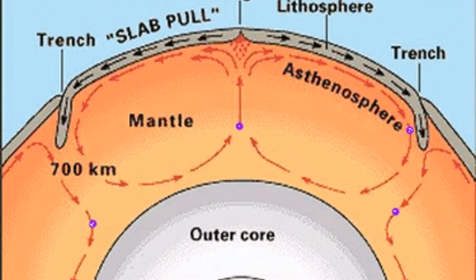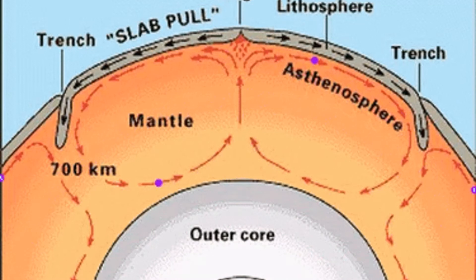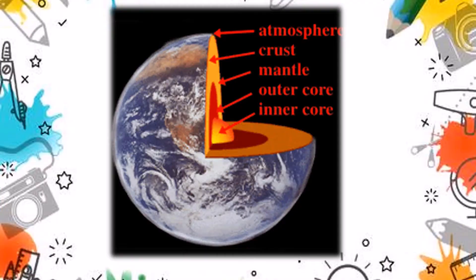The concept of plate tectonics was formulated in the 1960s. According to the theory, Earth has a rigid outer layer known as the lithosphere, which is typically about 100 km thick, and overlies a plastic, moldable, partially molten layer called the asthenosphere. The lithosphere is broken up into seven very large continental and ocean-sized plates, six or seven medium-sized regional plates, and several small ones.